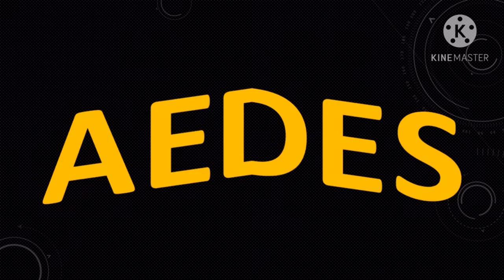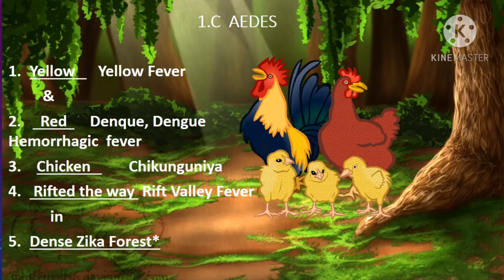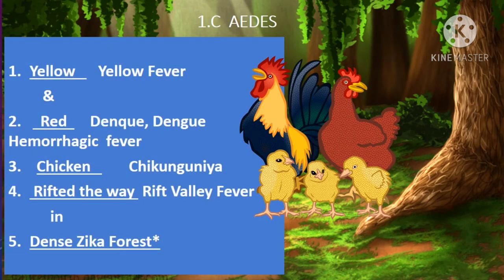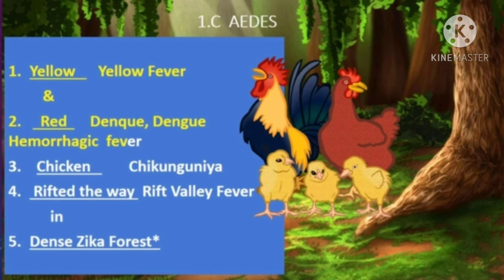The third type of mosquito is Aedes. The mnemonic for learning diseases caused by Aedes is 'Yellow and Red Chicken Rifted the Way in Dense Zika Forest.' Yellow stands for yellow fever, Red stands for dengue and dengue hemorrhagic fever, Chicken stands for chikungunya, Rifted the Way stands for Rift Valley fever, and Zika Forest stands for the Zika virus — Zika forest being a forest area in Uganda, Africa.